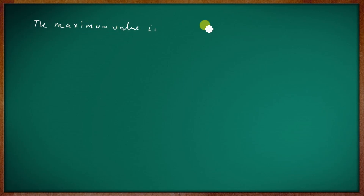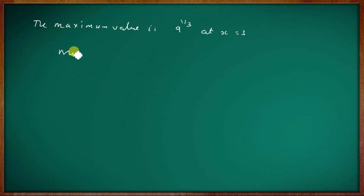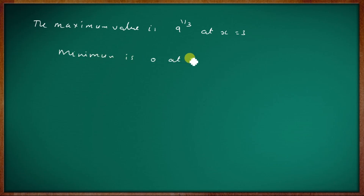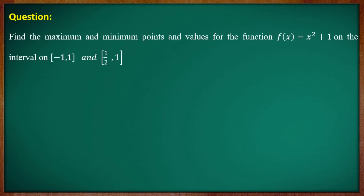The maximum value is 9^(1/3) at x = 3, and the minimum value is 0 at x = 0. Question done.